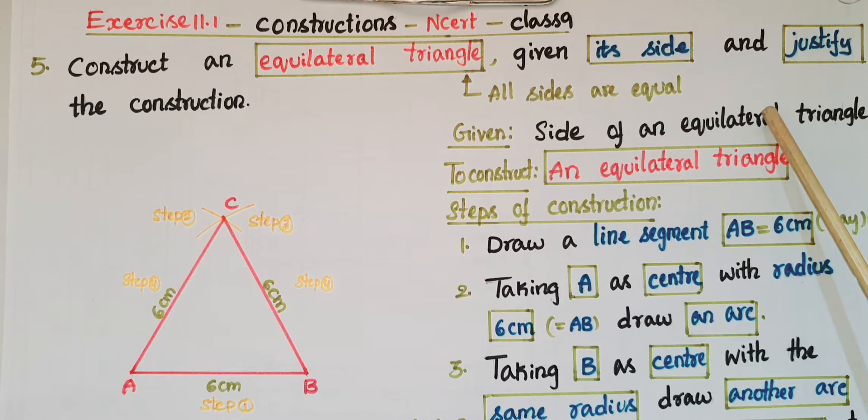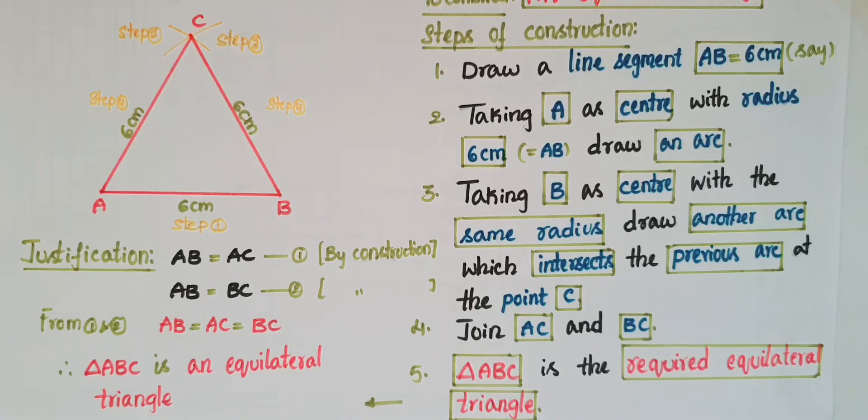So one side of an equilateral triangle is given. We know that in an equilateral triangle all sides are equal, and by using that side we have to construct an equilateral triangle. Now to construct an equilateral triangle, first draw a line segment.